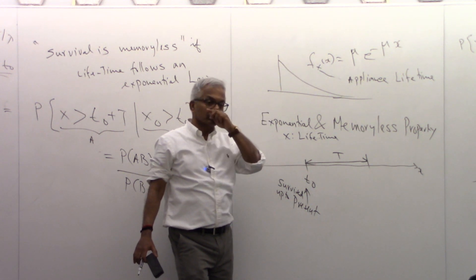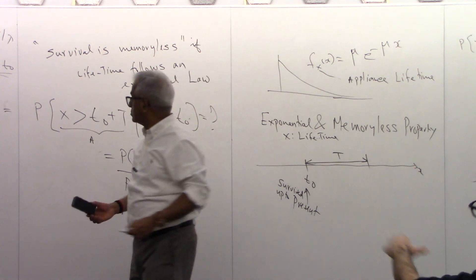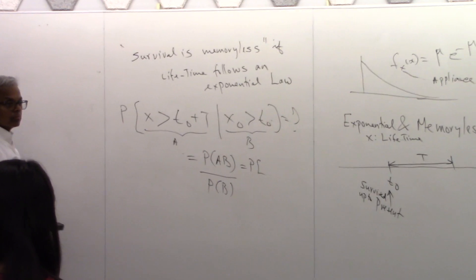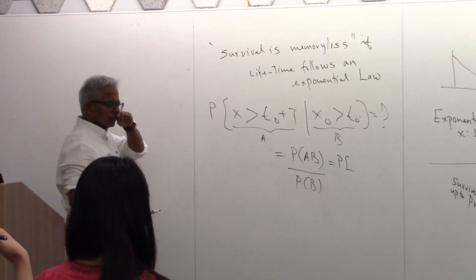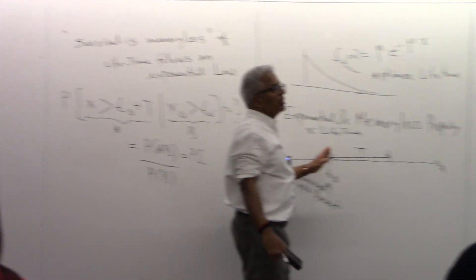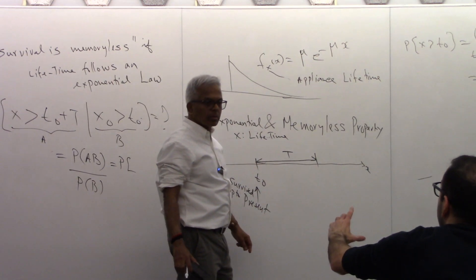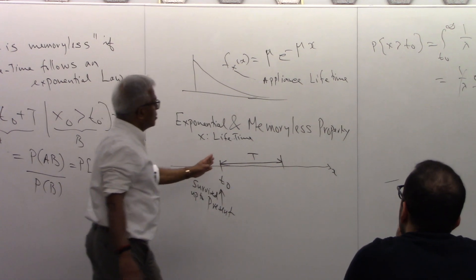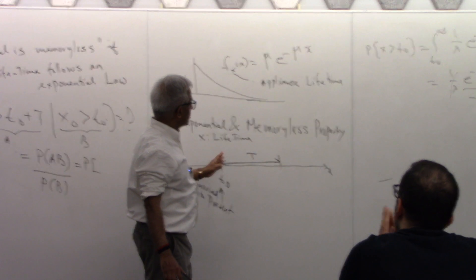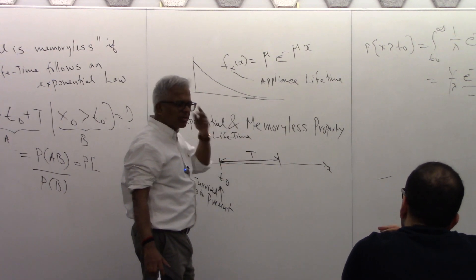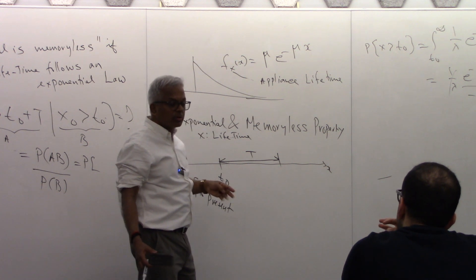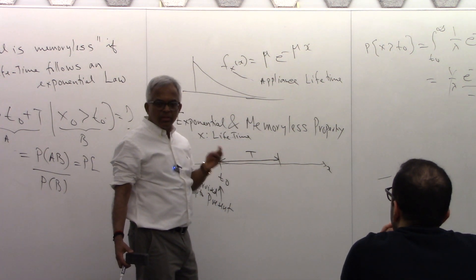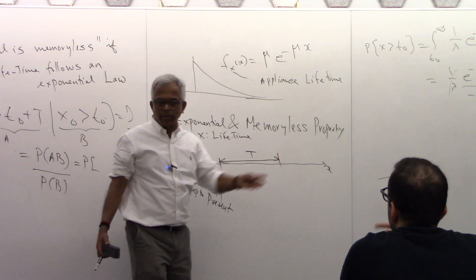Student asks: In the first part, when we counted the probability bigger than t0 plus t, shouldn't it be supposed to be less than that and bigger than t0, from the current moment up to the next five years? Instructor: What is the probability that it will survive—it all depends on the wording. What is the probability that it will survive at least five years? Next five years. That means it's only going to die beyond that. So that's what I wrote. X is like the survival.